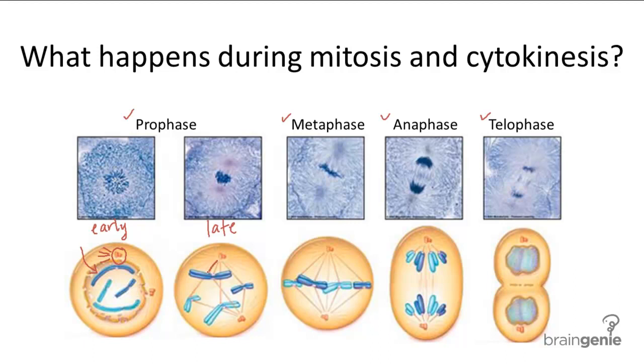In late prophase, the spindle fibers elongate and attach onto the centromeres of the chromosomes, and you can also see that the nuclear membrane has completely dissolved.